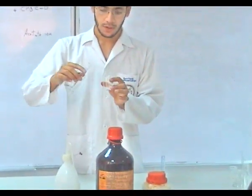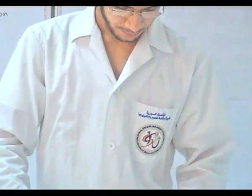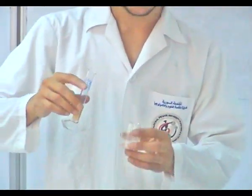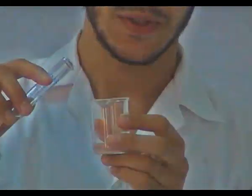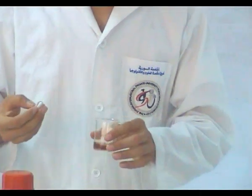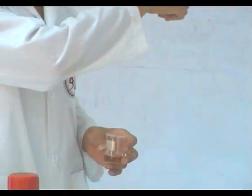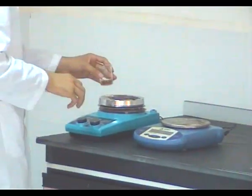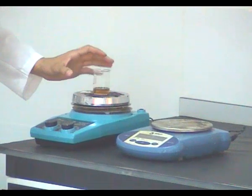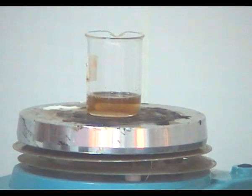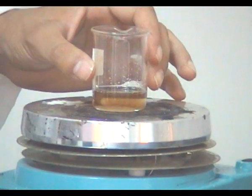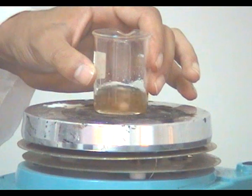We will dissolve the para-aminophenol in water first, and then we will add the acetic anhydride slowly. Note that this reaction is exothermic — caution! Do not add all the acetic anhydride in one step. After adding the acetic anhydride, we will place it on the magnetic stirrer and stir until the solid mass is dissolved, then stir for an additional ten minutes to ensure the reaction is completely done.